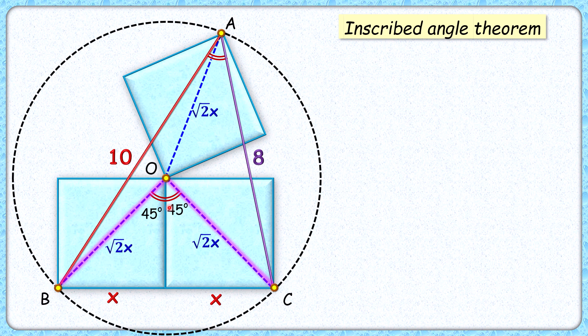And by the theorem it will make half of that in the remaining part of the circumference, so this angle here will be 45 degrees.